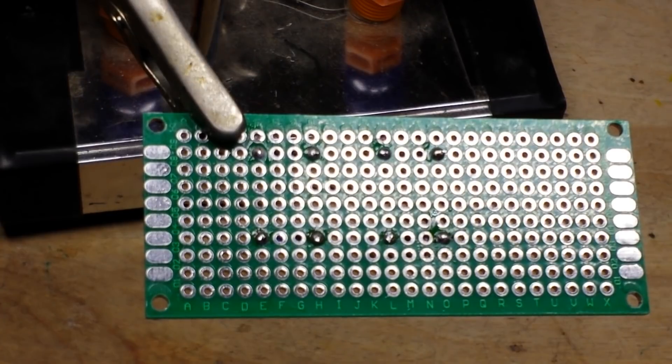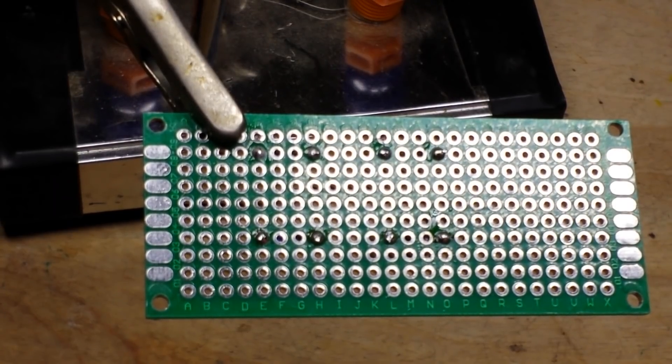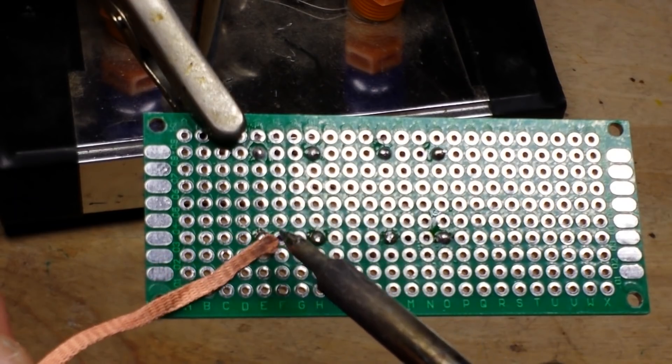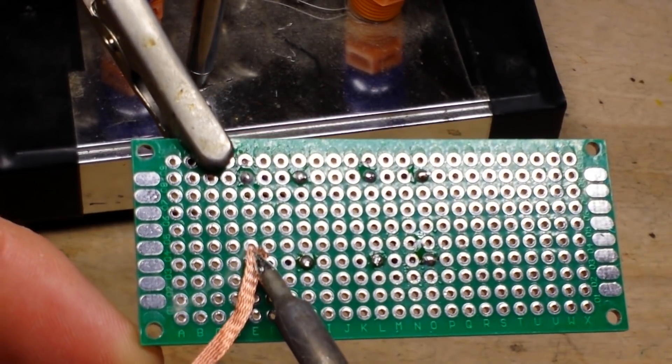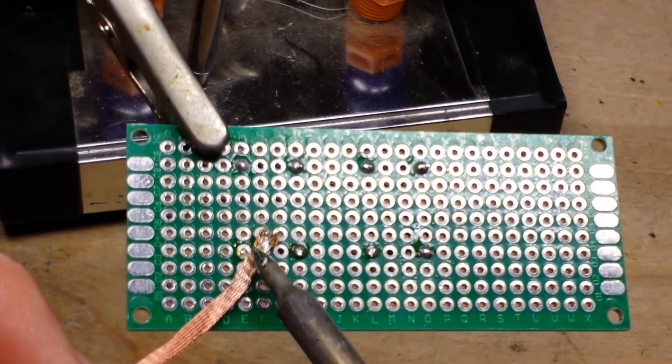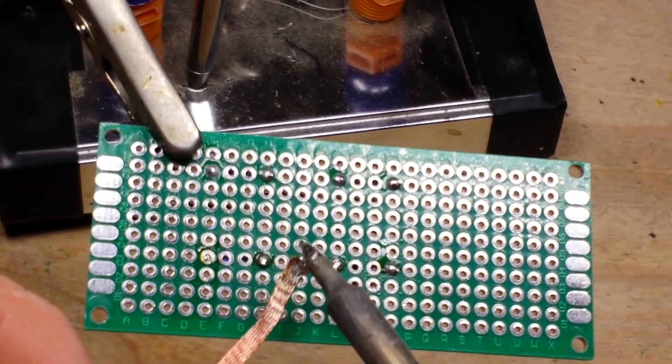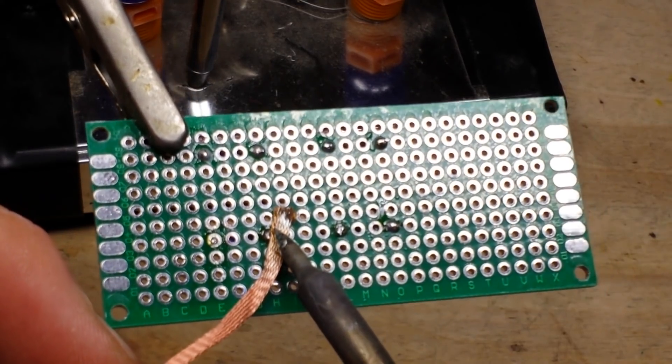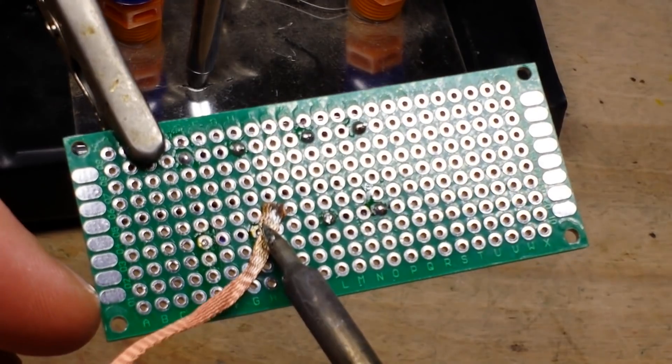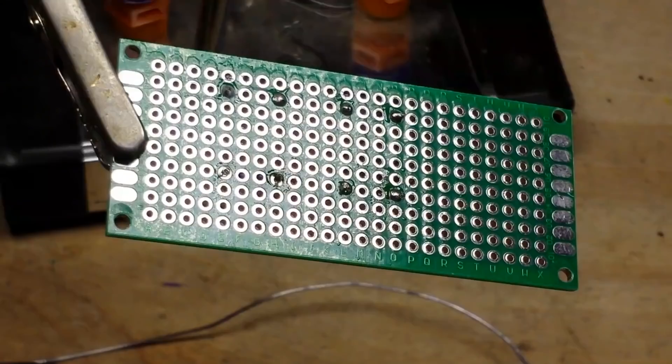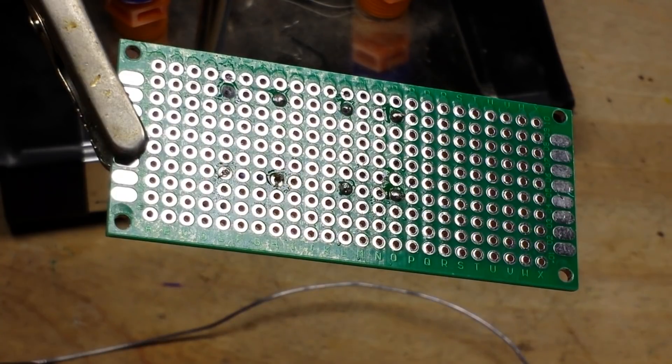Alright, so I trimmed the leads off and now we'll test out the NTE desoldering wick. See how well it does. I'm going to clean my iron, get on here and see what we get. Not bad. Now these are plated through holes, so that does make things just a little bit more interesting.